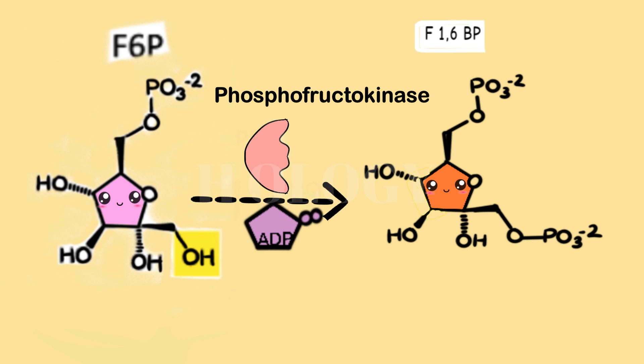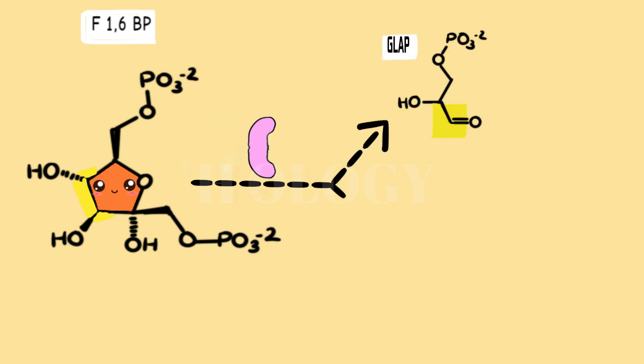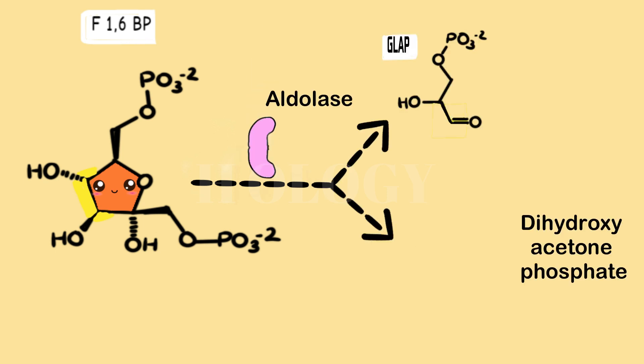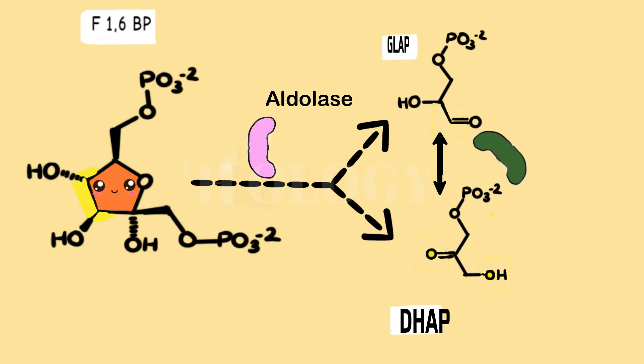Step 4: The enzyme aldolase splits fructose-1,6-bisphosphate into two 3-carbon molecules, dihydroxyacetone phosphate and glyceraldehyde-3-phosphate. Step 5: Dihydroxyacetone phosphate is converted into glyceraldehyde-3-phosphate with the help of the enzyme triose-phosphate isomerase.